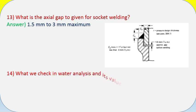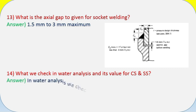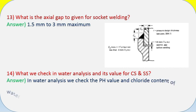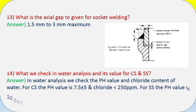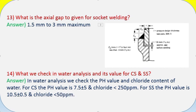Question 13: What is the axial gap to be given for socket welding? Answer: 1.5 mm to 3 mm maximum. Question 14: What do we check in water analysis and what are its values for CS and SS? Answer: We check pH value and chloride content. For CS: pH value is 7.5 ±0.5 and chloride 250 ppm. For SS: pH value is 10.5 ±0.5 and chloride 50 ppm.